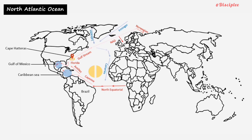The Canaris current flowing southwards eventually merges with the North Equatorial current, completing the clockwise circuit of the North Atlantic Ocean. This sums up our discussion on North Atlantic Ocean circulation. In the next video, we will talk about South Atlantic Ocean circulation.